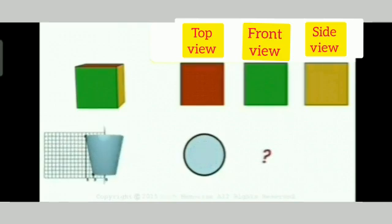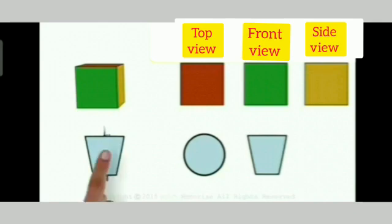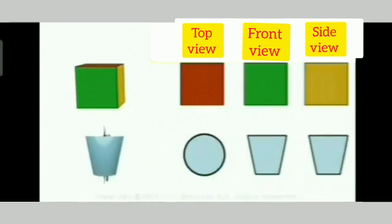Friends, when we view the empty glass from front, then think which shape will appear? Yes, this type of shape will be visible to us. And when we view the empty glass from side, then also this type of shape is visible. So, in this way, from front view and side view, the same shape appear to us.